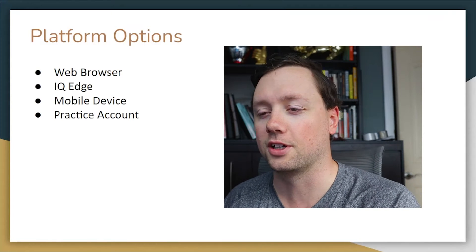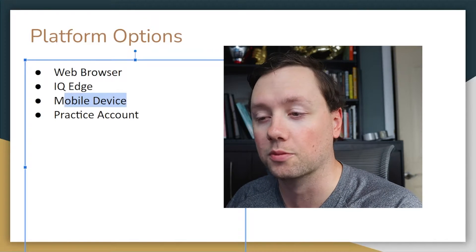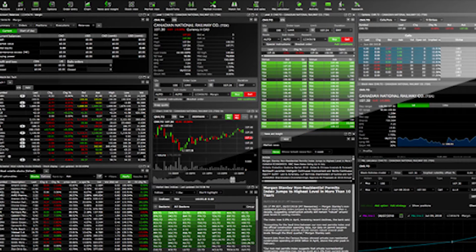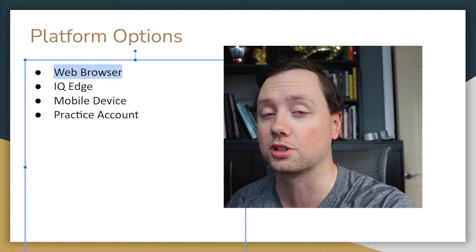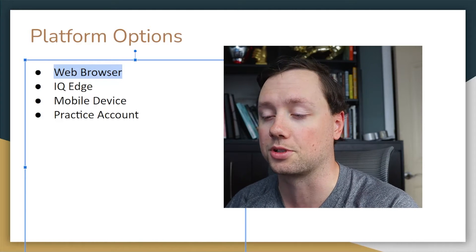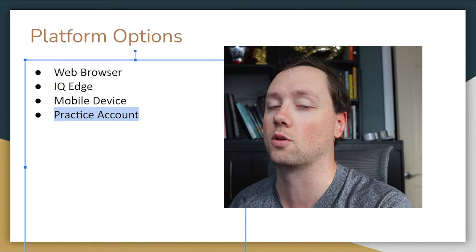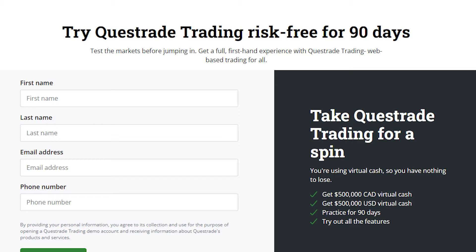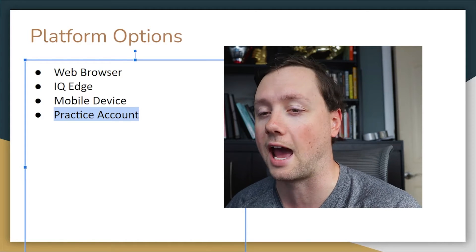When it comes to Questrade, you actually have a couple of different platforms that you can choose from. You can use Questrade on your mobile device and their app. You can also use IQ Edge, which is basically the software — if you're a day trader or a swing trader and you want to set up multiple screens and do some technical analysis, this is probably the one you're going to want. If you're somebody that is just long-term investing and you want to access it from your computer, the web browser option is probably going to be the best for you. And if you're just getting started and you want to try things out and you're not ready to use real money or you want to test out a couple strategies, I would highly recommend using a practice account — that's where they give you fake money that you can trade and invest in the real markets to see how you would do.